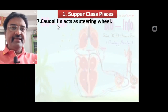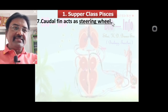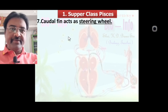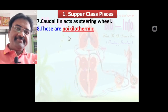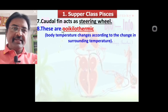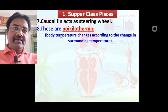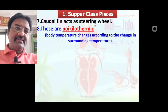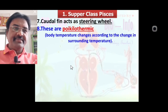Character number seven: the caudal fin — the tail fin — acts as a steering wheel of Pisces. These are poikilothermic animals because they cannot regulate their body temperature. Body temperature changes according to change in surrounding temperature. Hence, Pisces are called poikilotherms.